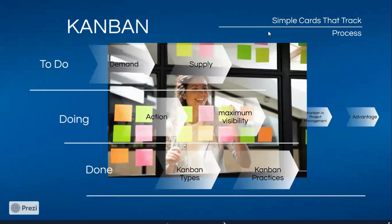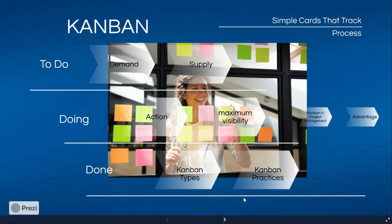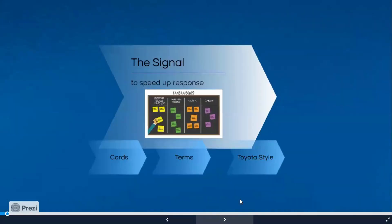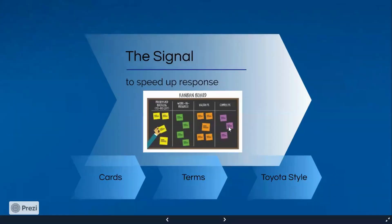Hello again. This is about Kanban — the visual clues, the simple tiny little cards on a board that speed up action and increase the agility of the process, as well as make the work very diligent in a company. Utilized initially by Toyota, but followed everywhere else. Let's have a learn about it.